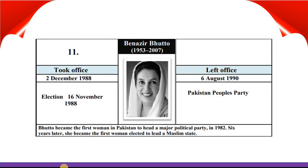Benazir Bhutto took office 2nd December 1988 and left office 6th August 1990. She was elected in elections on 16th November 1988 and belongs to Pakistan People's Party. Bhutto became the first woman in Pakistan to head a major political party in 1982. Six years later, she became the first woman elected to lead a Muslim state as the first female Prime Minister of Pakistan.